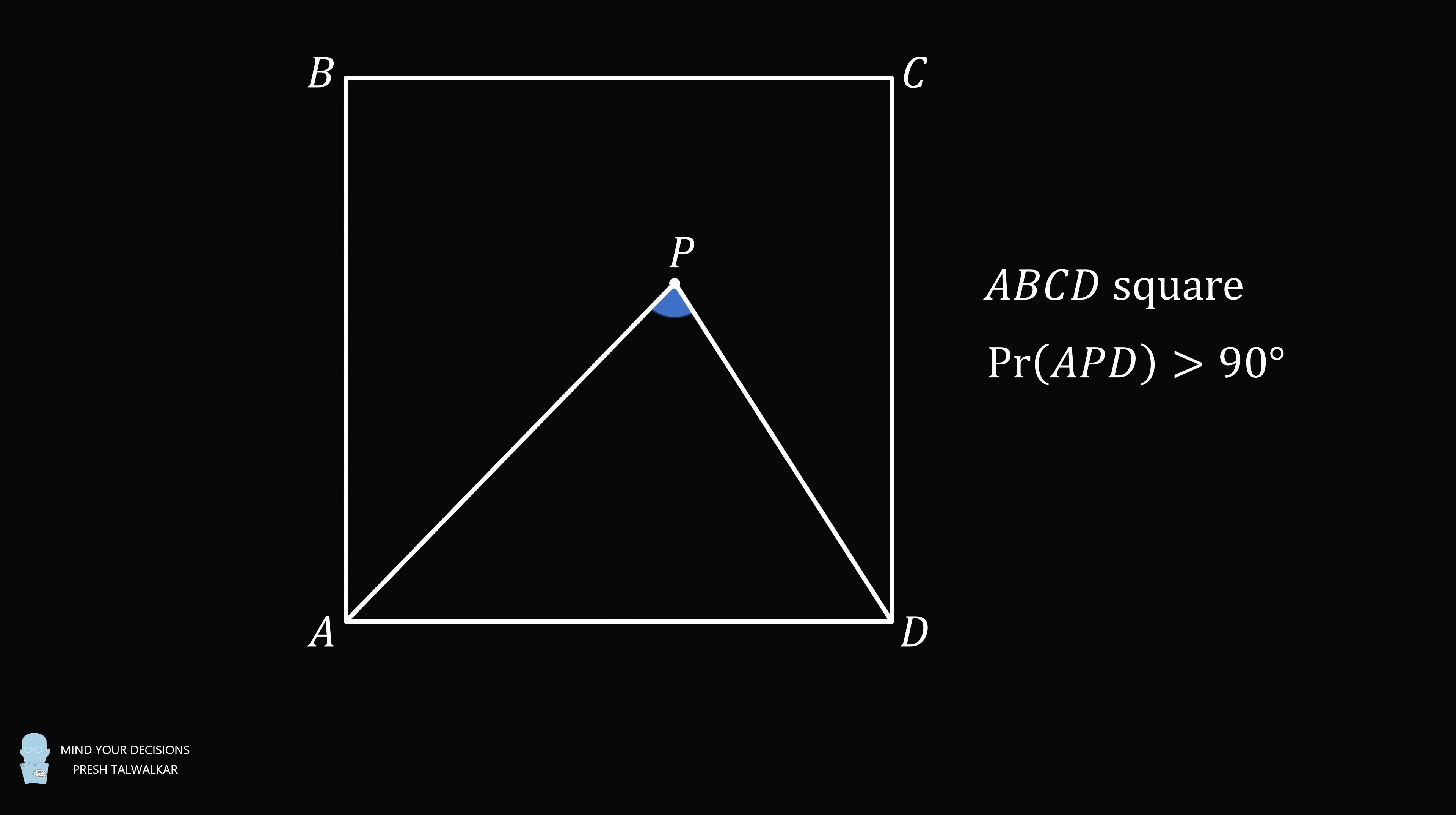The question is what is the probability that angle APD is greater than 90 degrees? In other words, what is the probability that angle APD is an obtuse angle? I thank Naman for the suggestion. Pause the video if you'd like to give this problem a try. When you're ready, keep watching to learn how to solve this problem.